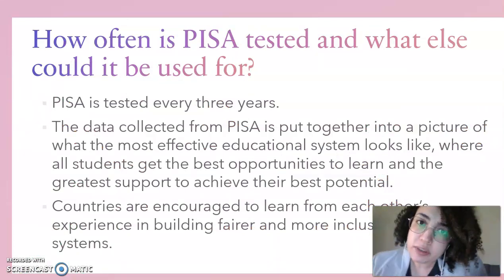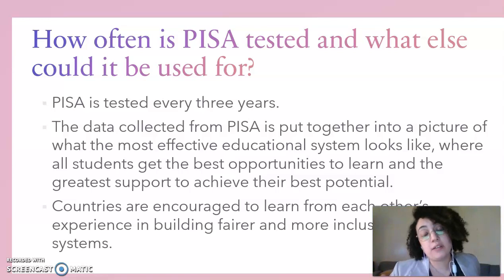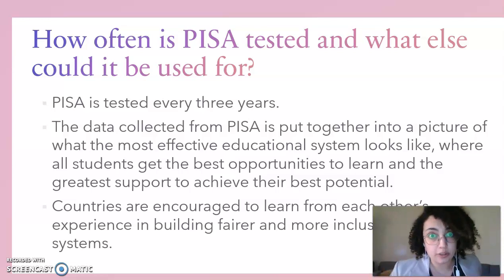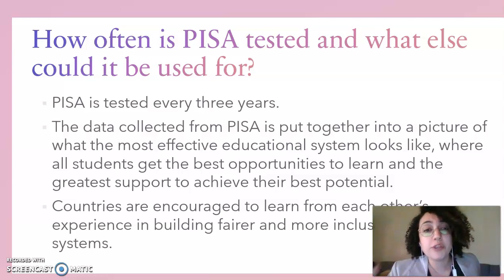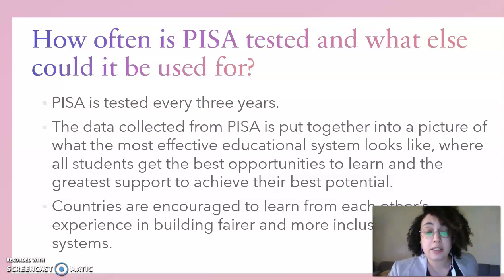PISA is tested every three years — that's why the last test was in 2018 and the next one is this year. The data collected from PISA is put together into a picture of what the most effective educational system looks like, where all students get the best opportunities to learn and the greatest support to achieve their best potential. The greater goal is to make educational systems truly more inclusive.